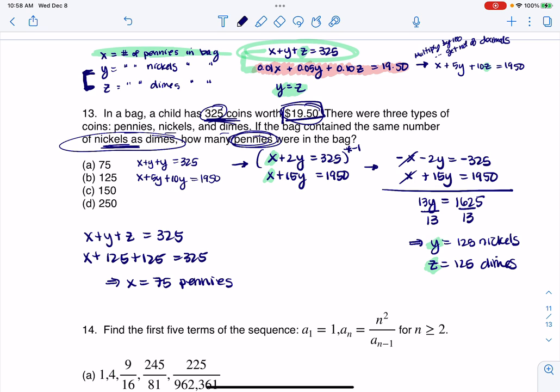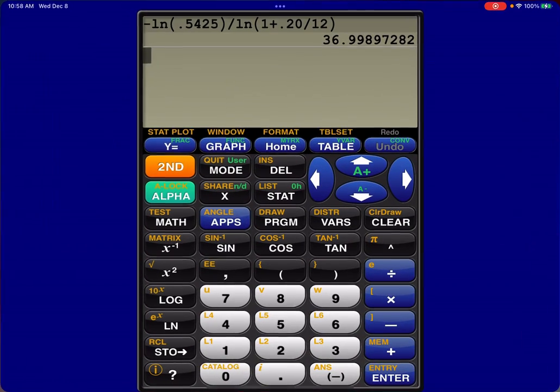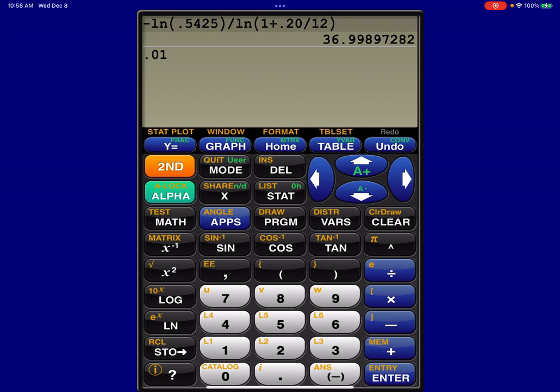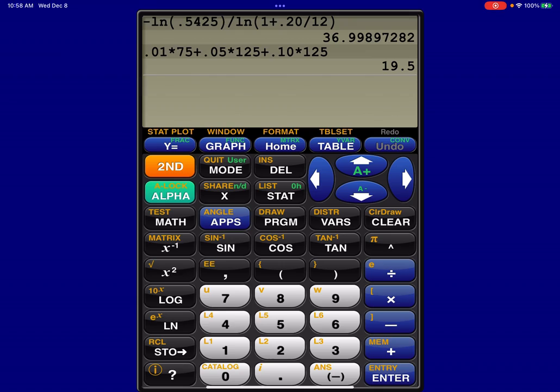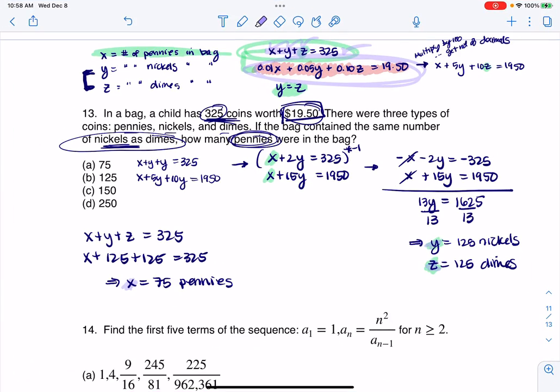And what you could do at this point is you could actually just double check or triple check, if you will. You can take your X value of 75 and your Y of 125 and Z of 125 and see if it fits in this equation, right? Is it true that 125 plus 125 plus 75 is 325? That is true. The next thing I would check is that this money is working out. So let me go ahead and head to my calculator for just a moment. So I would do 0.01 times those 75 pennies, and then I would do 0.05 times those 125 nickels, and then I would add to it 10 cents on those 125 dimes. And this should be 1950 and it is. So you can always double check if you have a little bit of time that your system is consistent and working. So I'm going to go with option A for this one.